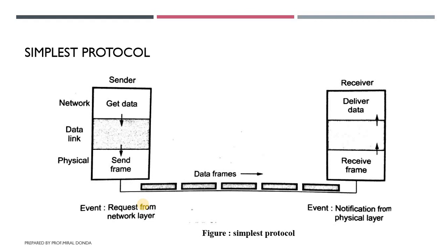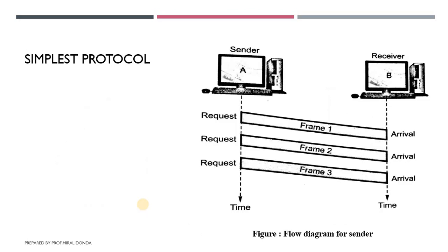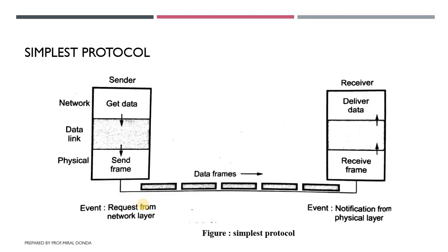The data link layers of the sender and receiver provide transmission service to their network layers. The data link layer uses services provided by the physical layer such as signaling, multiplexing, and so on for physical transmission of bits. As shown in this figure, the protocol lies in the data link layer at both the sender side and the receiver side.